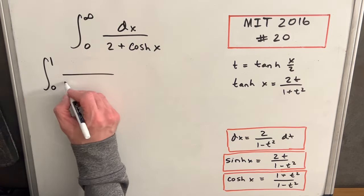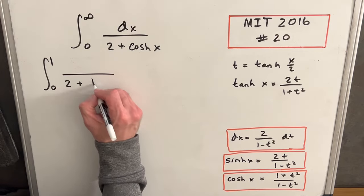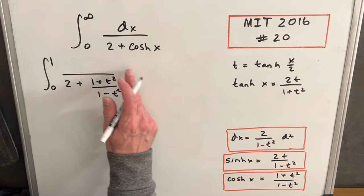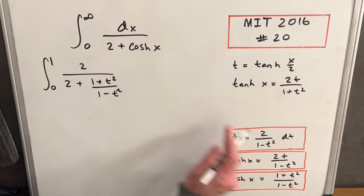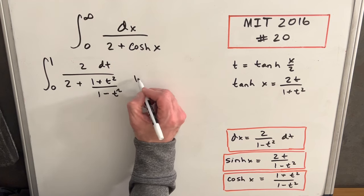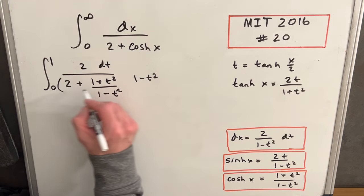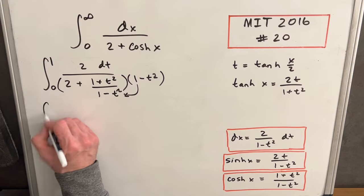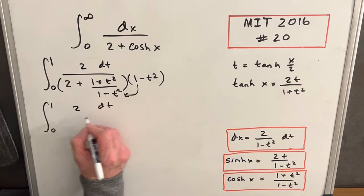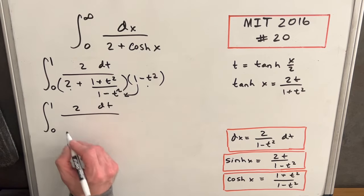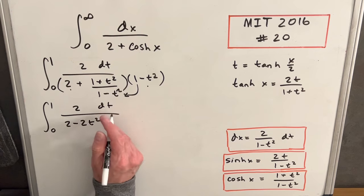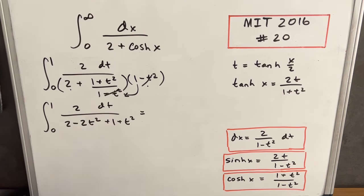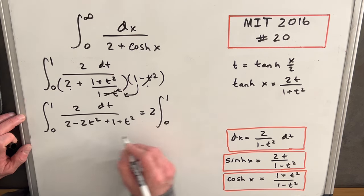Writing out the integral from 0 to 1: the denominator is 2 plus cosh(x), where cosh(x) = (1 + t²)/(1 − t²). For dx we put 2 dt in the numerator and (1 − t²) in the denominator. Multiplying through and distributing, the (1 − t²) terms cancel, and we get the integral of 2 dt over (2 minus 2t² plus 1 plus t²).